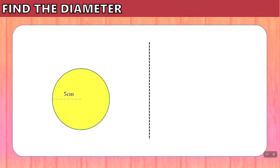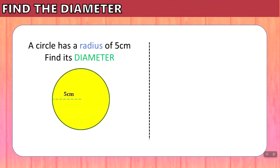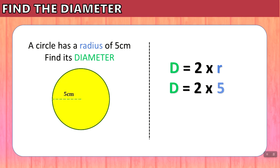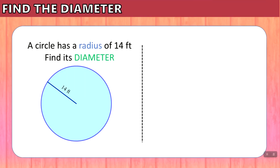So let's look at an example. Here is a circle. A circle has a radius of 5 centimeters — find its diameter. The formula we will use is D equals 2 times R. We know that the radius is 5 centimeters, so we substitute R for 5. That gives us D equals 10 centimeters. If we place another radius on the other side and we know that is also 5 centimeters, we can see that 5 plus 5 is equal to 10.